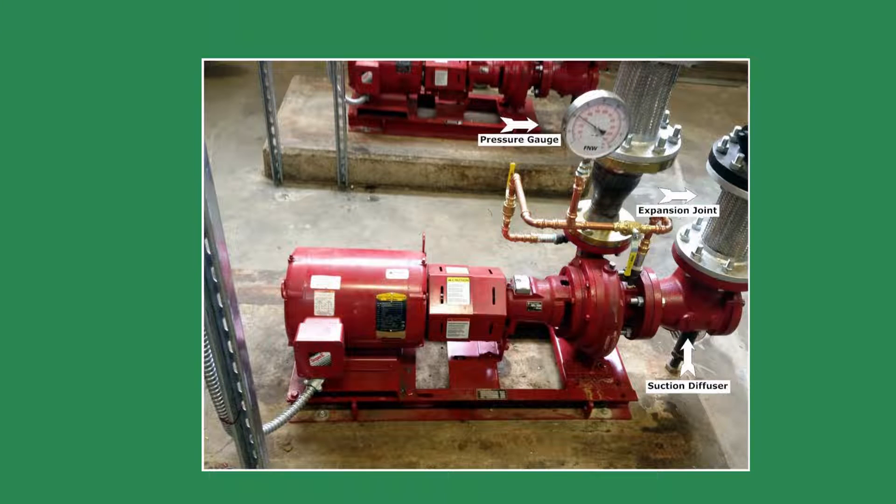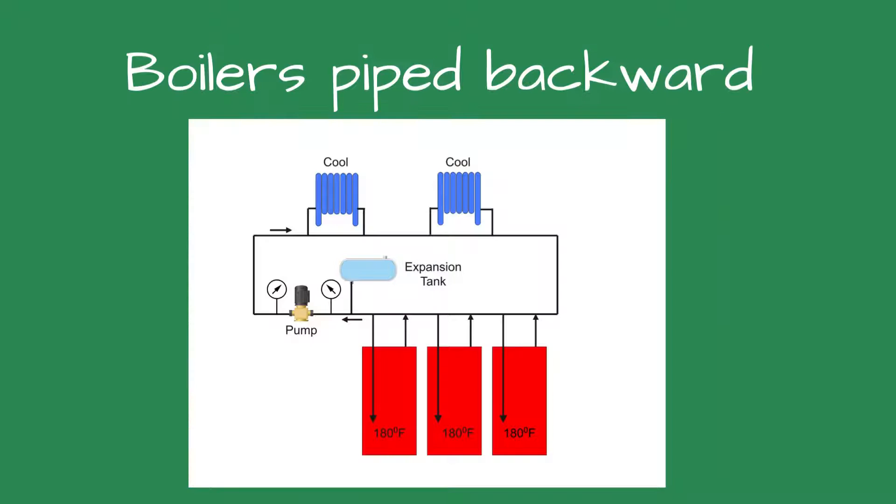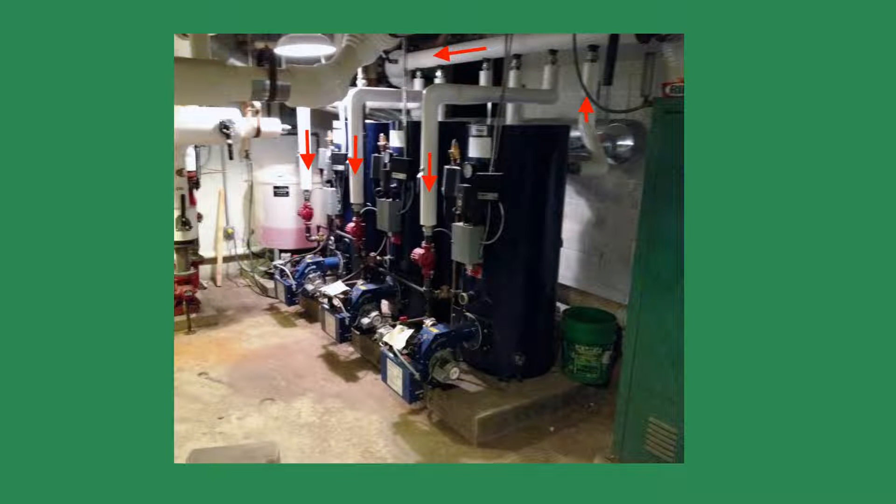Back in the boiler room, I noted the pressure differential across the pump. It was running. Sometimes, sketching the piping helps me troubleshoot a system. While doing so, I smiled as I saw the issue. The boilers were piped backward.